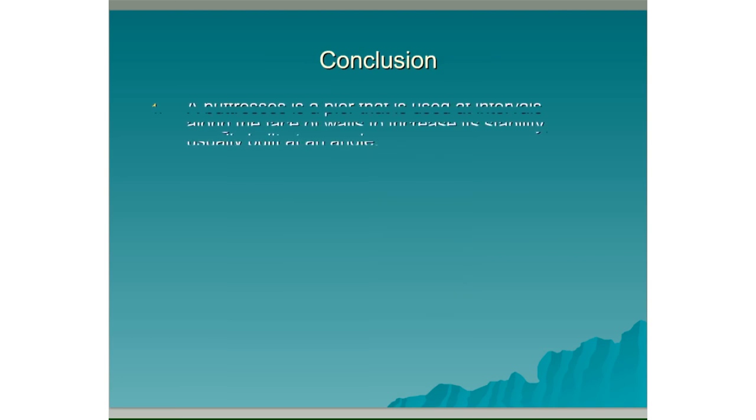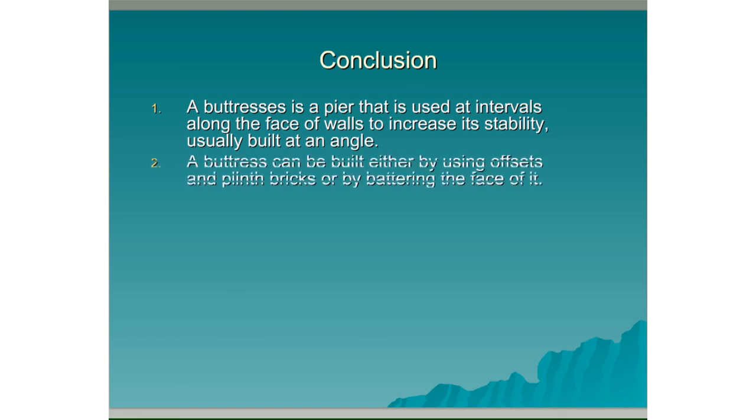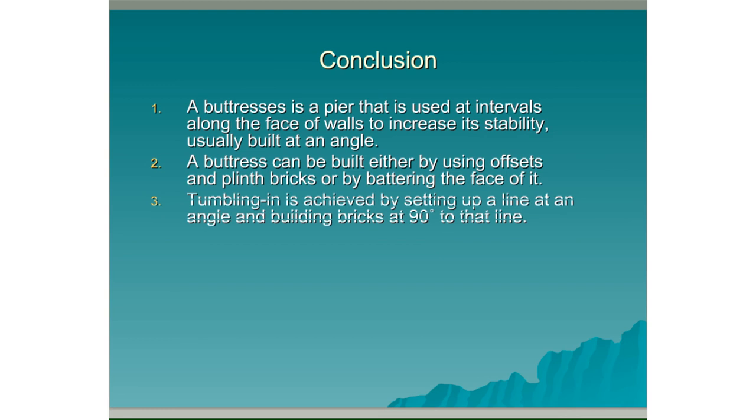Conclusion: A buttress is a pier that is used at intervals along the face of walls to increase its stability, usually built at an angle or at a slope. A buttress can be built either by using offsets with plinth bricks or by battering the face of it. Tumbling in is achieved by setting up a line at an angle and building bricks at 90 degrees to that line.